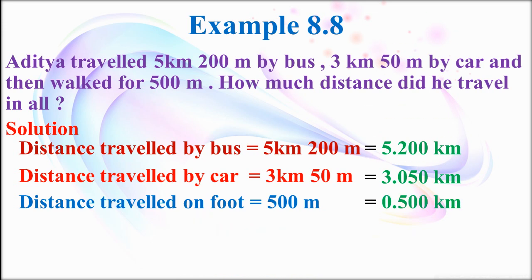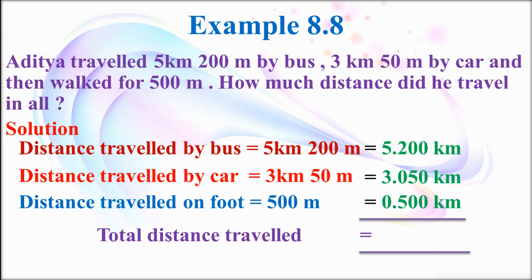That means 0.500 kilometer. Now look at these three measurements — all are in kilometer and they are like decimals. Now we are going to add them. What is the total distance traveled? Add and tell me. Yes, that is 8.750 kilometer.